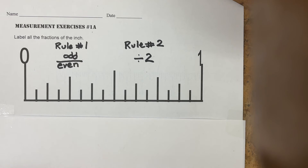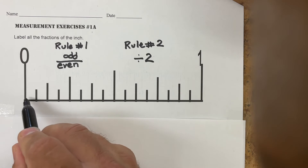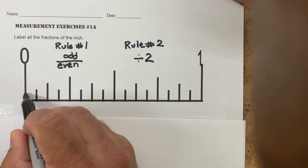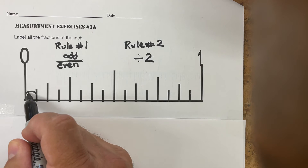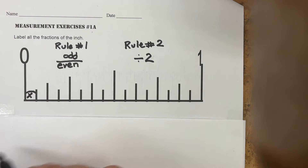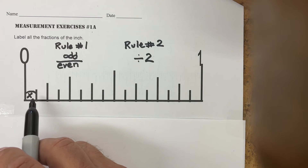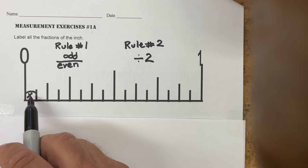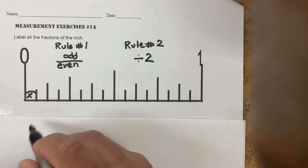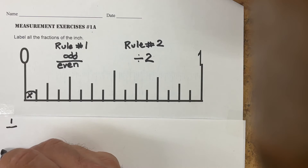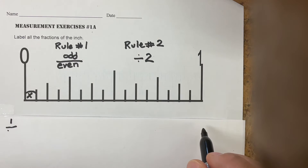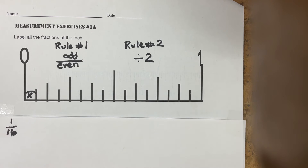So if you know the difference between odd and even numbers and you can divide numbers by two, you can measure. Let's start here at zero. We are counting spaces, not lines, because a distance is a measurement from point A to point B — we're not counting lines. This distance from zero to the first increment is one section out of a possible 16.